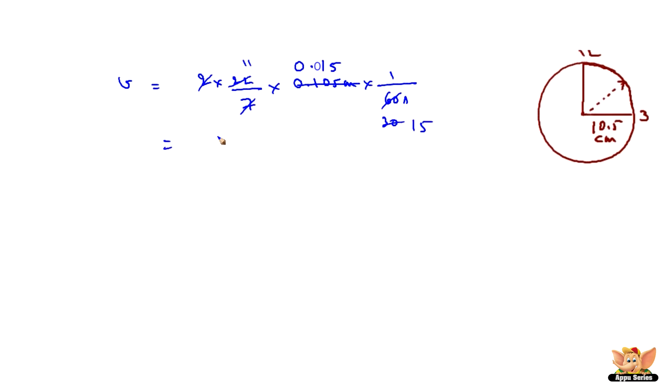So this becomes 15 times 0.001, which is 11 into 0.001 meter per second, which will be ultimately 0.011 meter per second. So the velocity is given as 0.011 meter per second.